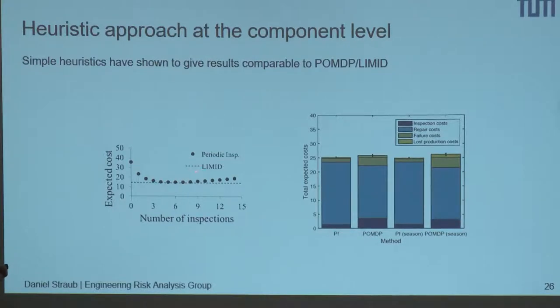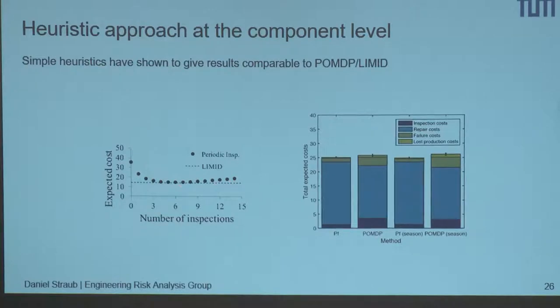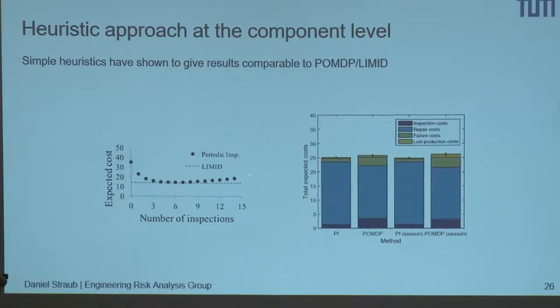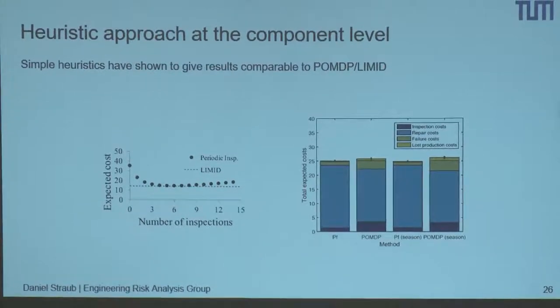A comparison also shows results from periodic inspections — assuming a fixed number of inspections distributed at equal intervals over the lifetime. The optimum is very similar, and this is also because the objective function is very flat near the optimum. If you are a bit off, it doesn't really matter. There are a number of such results showing that for this type of problem, using a simple heuristic gives almost as good results as the exact solution.